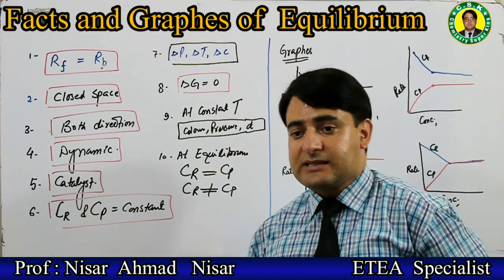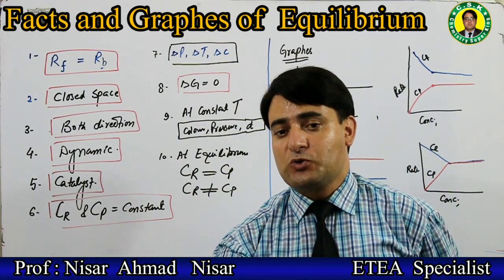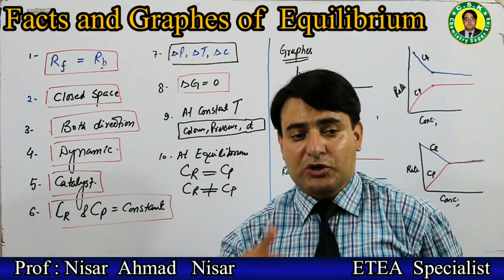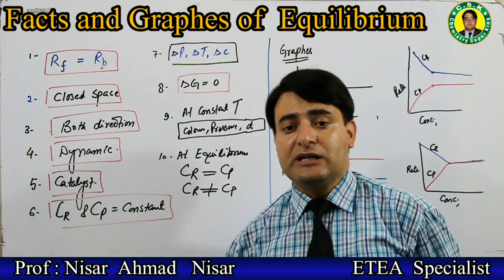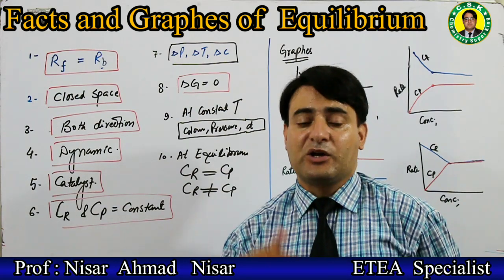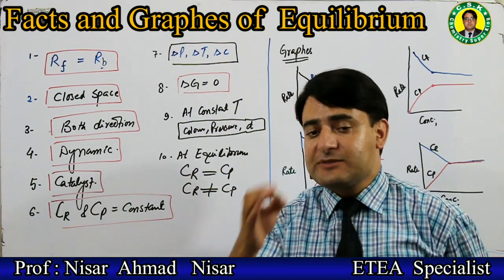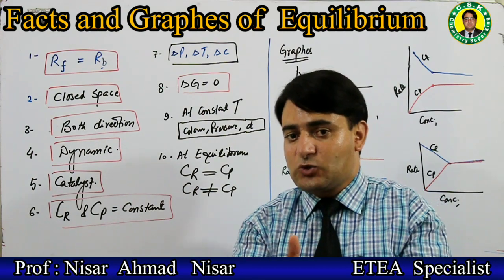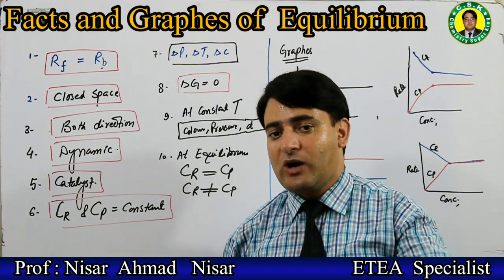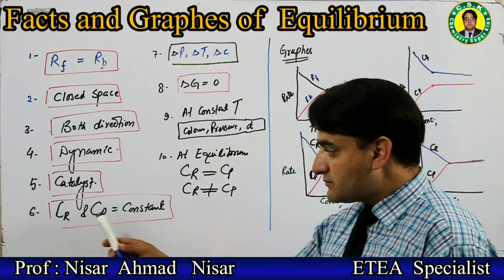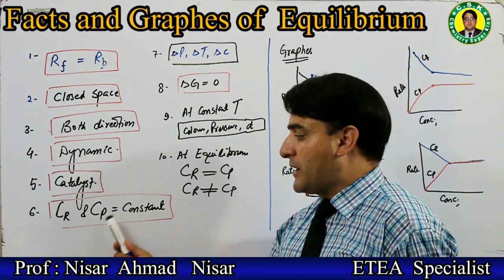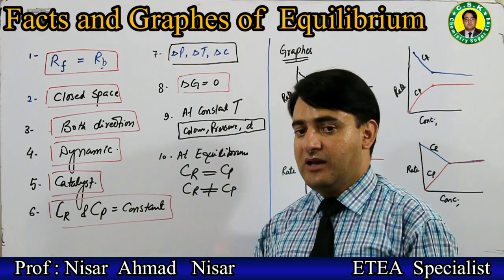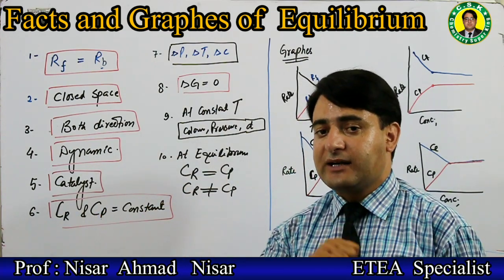A catalyst can affect the time required for the establishment of equilibrium. A positive catalyst reduces the time required to reach equilibrium, while a negative catalyst increases the time required. Remember: at equilibrium, the concentration of products does not change - the concentration of reactants and products at equilibrium remains constant.